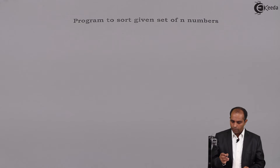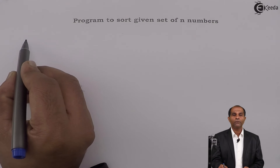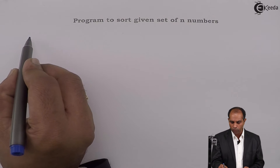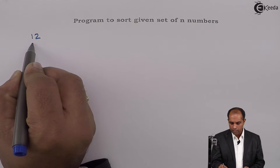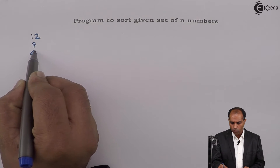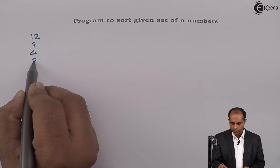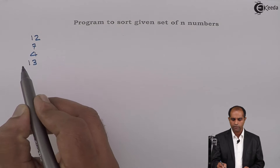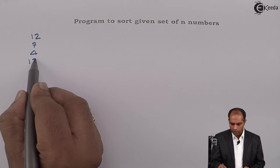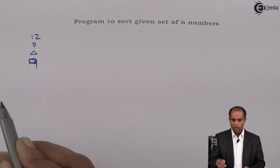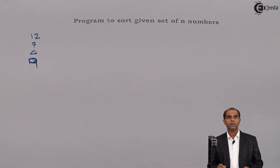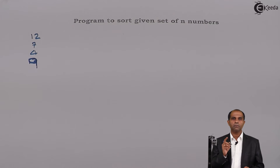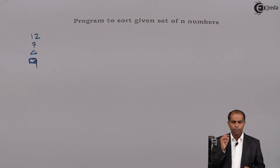Let us discuss the bubbling of numbers and sorting them in ascending or descending order. You can try the program with any one. Let us try to sort a given set of n numbers. Assume that I have four numbers: 12, 7, 4, and 9. My task is to arrange these numbers in ascending order, in increasing order.